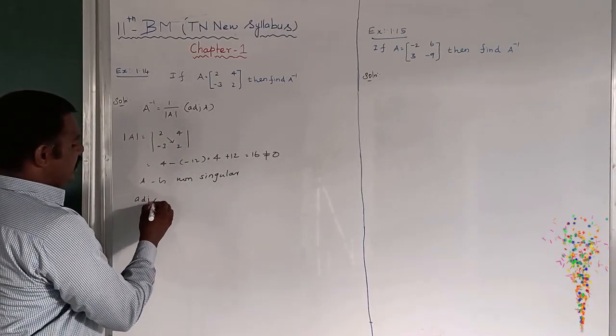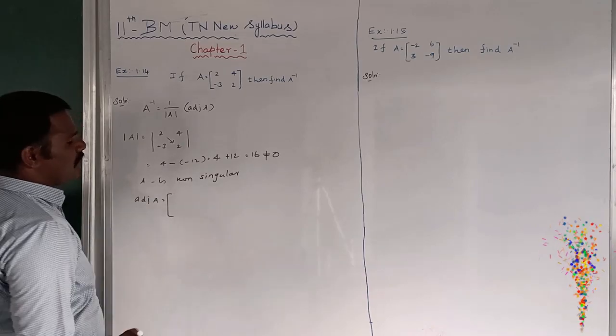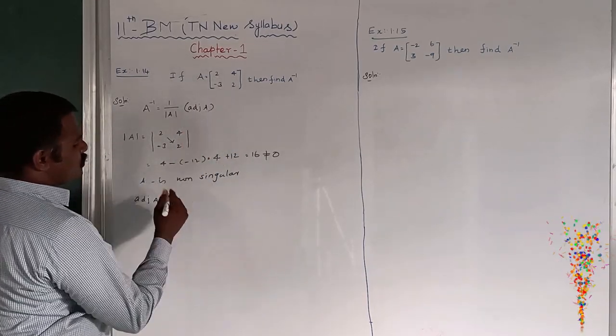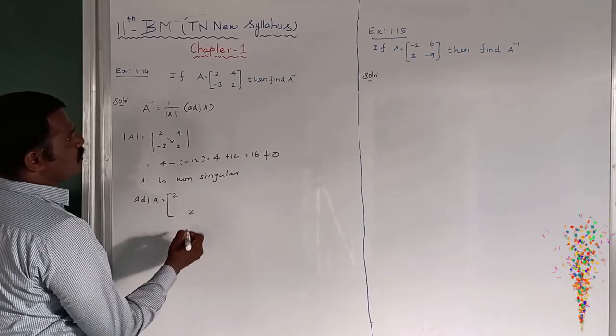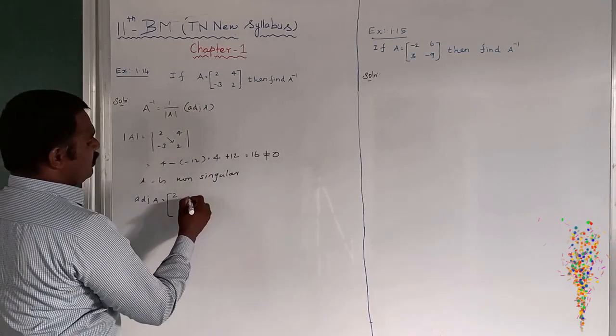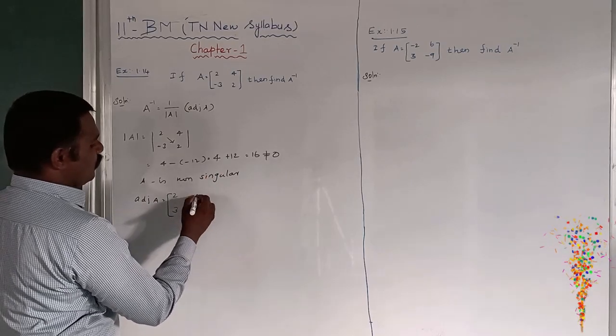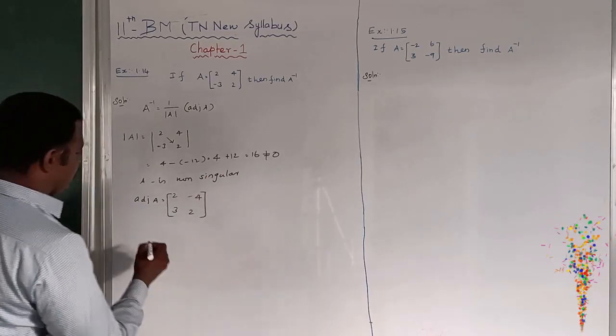Then adjoint A. Next we have to find out adjoint A. I already told you what is adjoint A. I want to interchange these two terms, 2, 2, and I will change the symbol: minus 4, this is plus 3. Minus 4, plus 3. This is the adjoint of A.